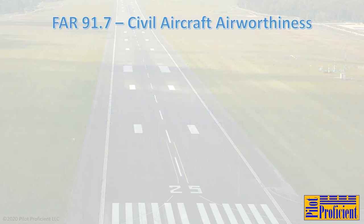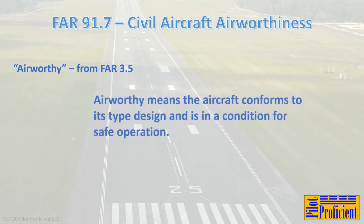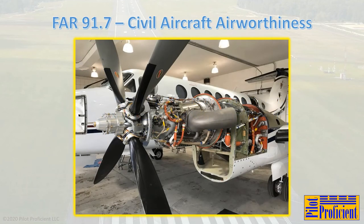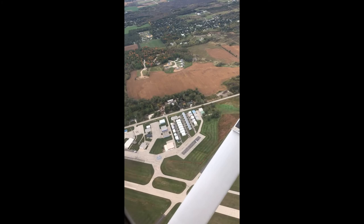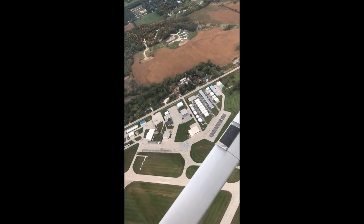So what does it mean when we say an aircraft is airworthy? The FAA defines this term as meaning that the aircraft conforms to its type design and is in a condition for safe operation. Just like 91.3 tells us who has final authority over the flight operations, 91.7 identifies the PIC as the person who must bear ultimate responsibility for the condition of his or her aircraft. There's no excuse for taking off in an un-airworthy aircraft, and the PIC is never absolved of this responsibility.